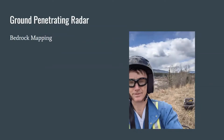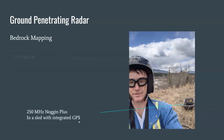With those kind of parameters, the most efficient way to collect data was to drop the GPR on a sled and have the integrated GPS tell us where we were as the data was being collected, and just pull it behind a quad.